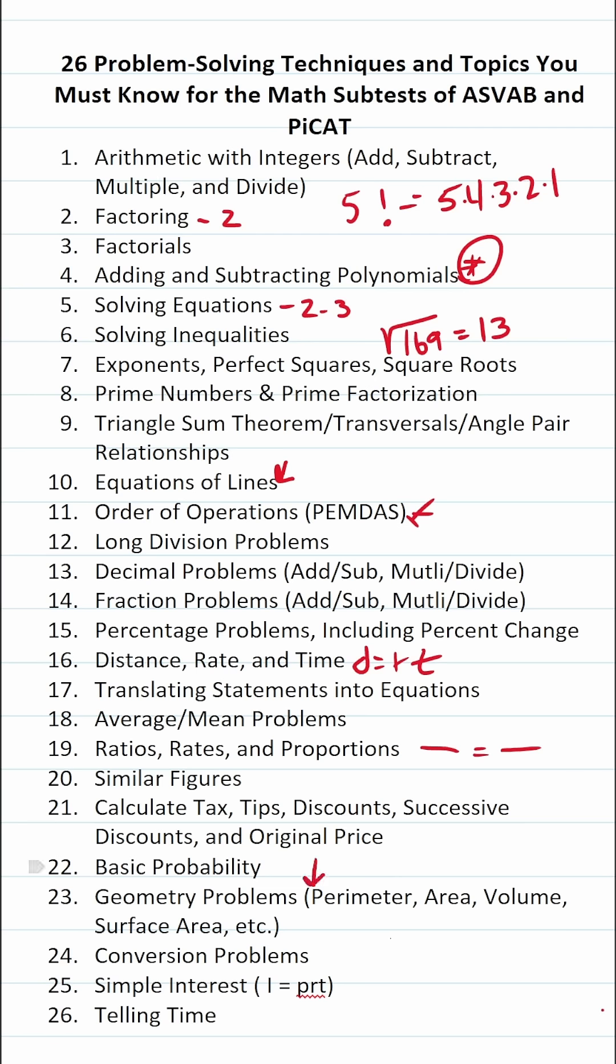Again, you're not given a reference sheet or a calculator on the ASVAB or PICAT. So you do have to commit these geometry formulas to memory at some point. You have to be able to make some simple conversions. You have to be able to calculate simple interest. That is I equals P times R times T. Interest equals principal times rate times time. And you above all else have to be able to tell time.